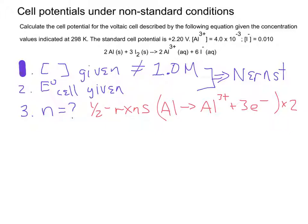Also, in this problem, I tell you that it's at 298 Kelvin. And so, that tells you which version of the Nernst equation you can use. You can actually use the simpler version of